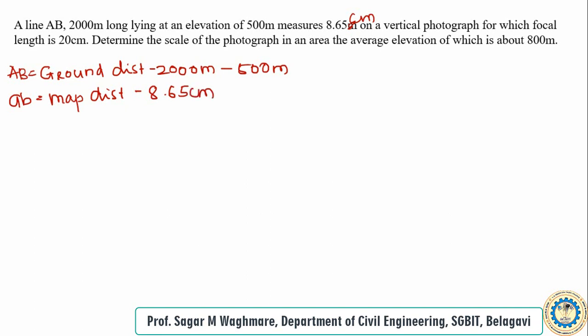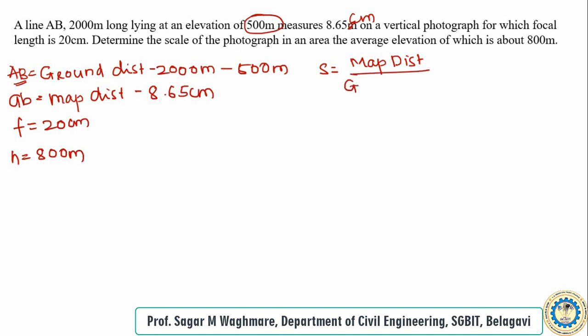The units should be centimeters. Now, the given data: focal length is 20 centimeters. We need to determine the scale of the photograph in an area of average elevation 800 meters. The elevation of 500 meters is with respect to the elevation of AB. We write down the formula: scale equals map distance divided by ground distance.